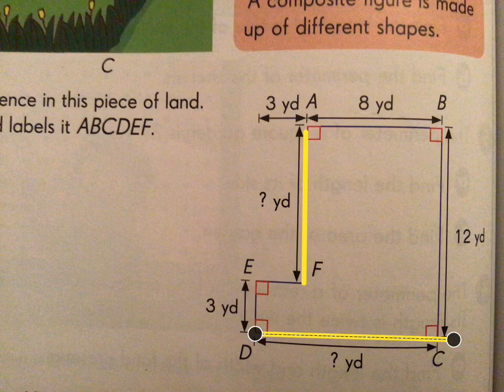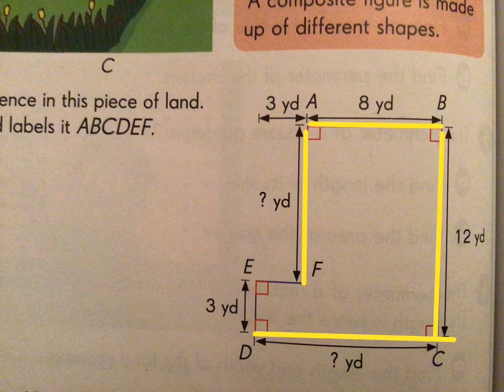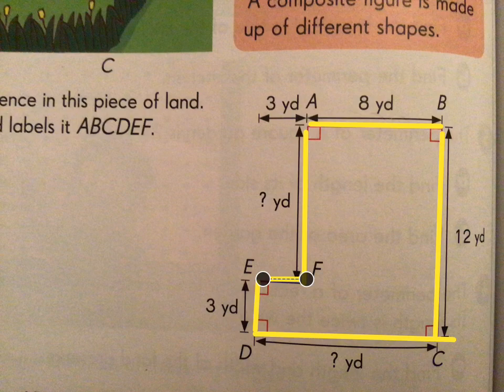Before we can find the perimeter, we have to find those side lengths, because remember perimeter is the measure around the outside — peri meaning around, meter meaning measure. So let's find those two missing side lengths so that we can find the perimeter.